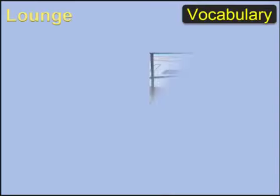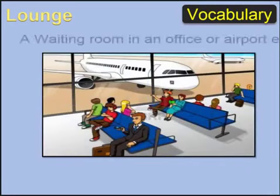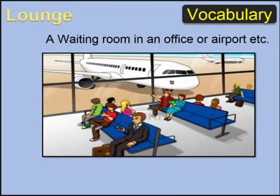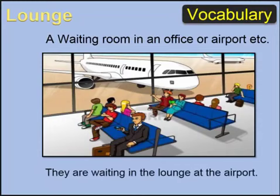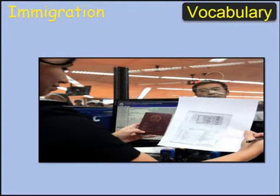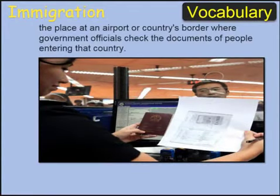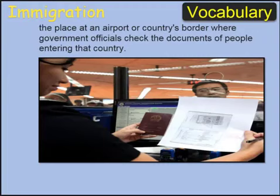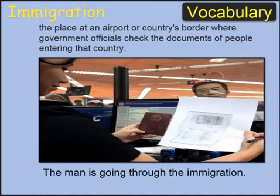Let's jump into the vocabulary first. Lounge — look at the picture. Meaning: a waiting room in an office or an airport. Look at the sentence: They are waiting in the lounge at the airport. Immigration — look at the picture. Meaning: the place at an airport or country's border where government officials check the documents of people entering that country. Sentence: The man is going through the immigration.